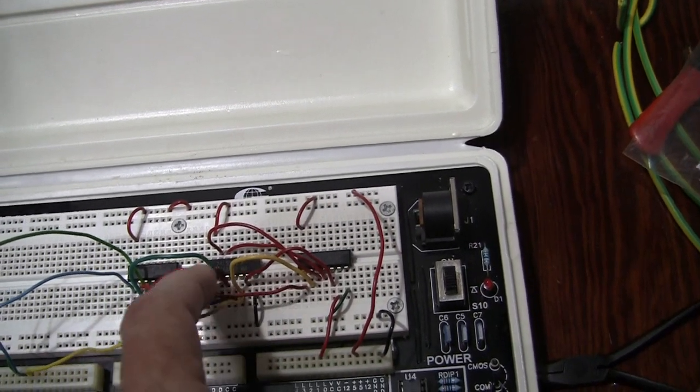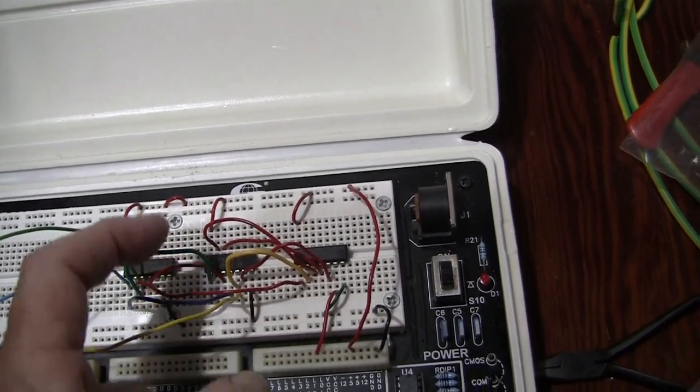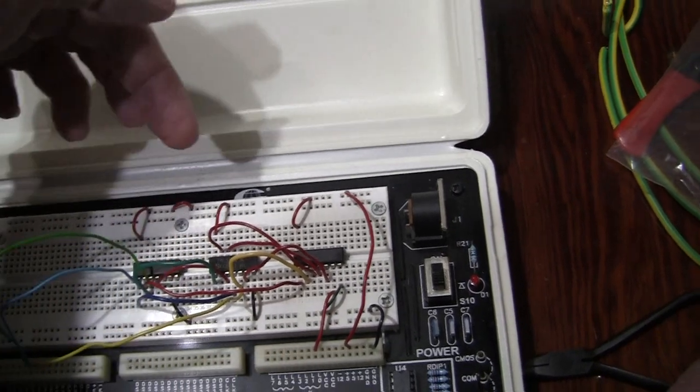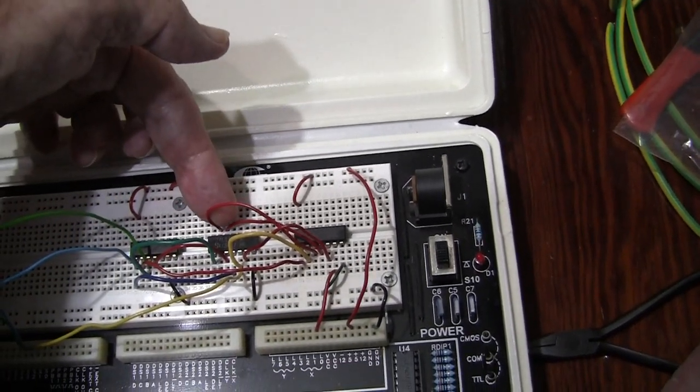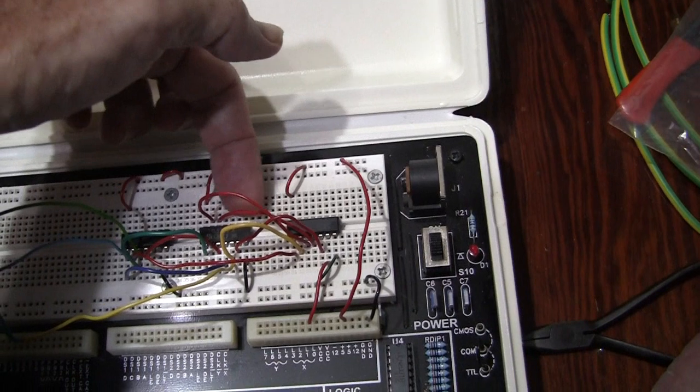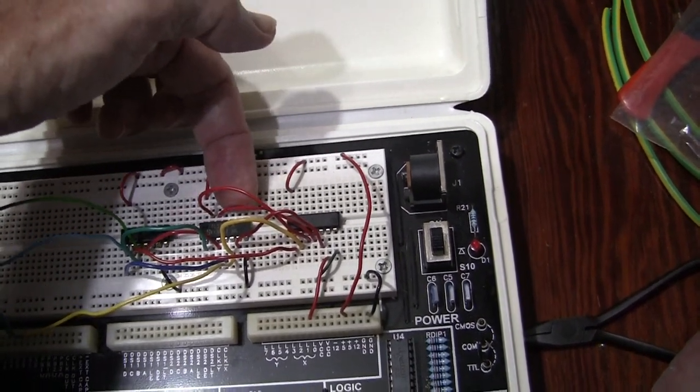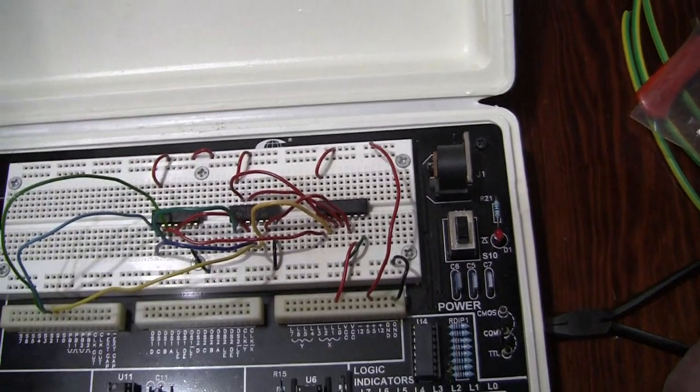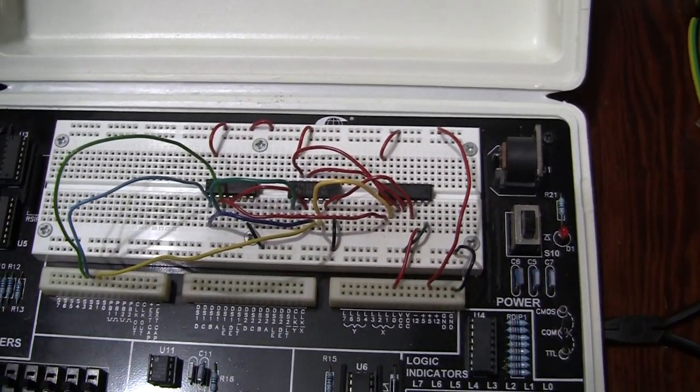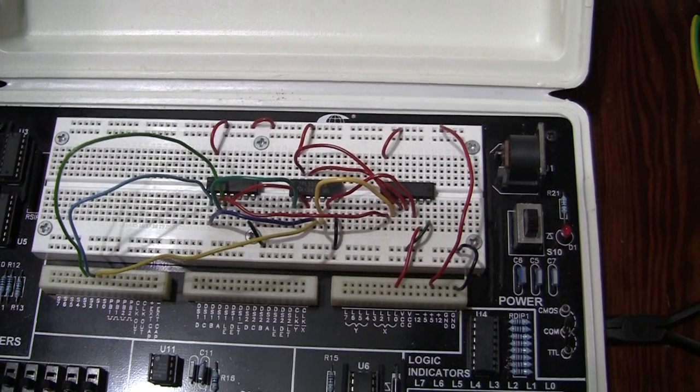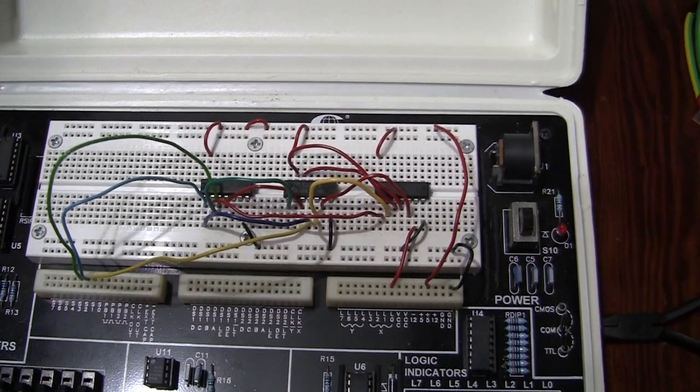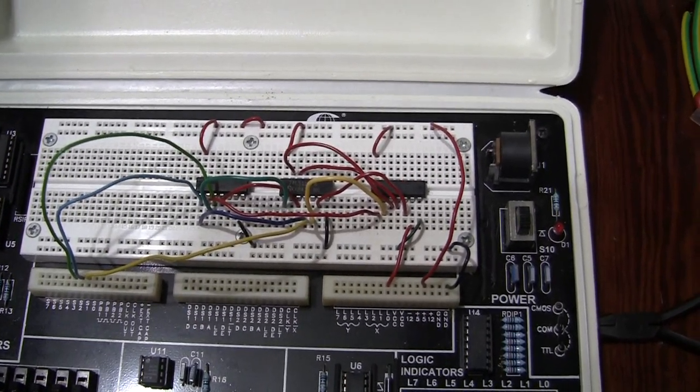We are using the two triple input AND gates on this side which means we need the extra input and output on this side. These bottom pins are left blank because we are not using the third AND gate. That completes the wiring of your circuit and we will now test it and run through the truth table.